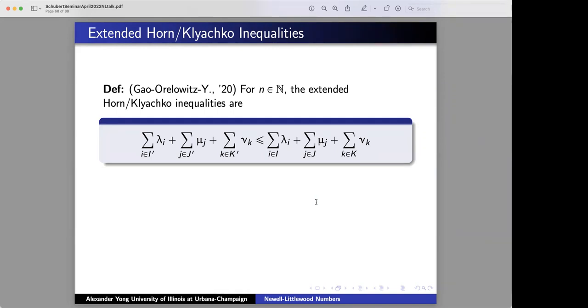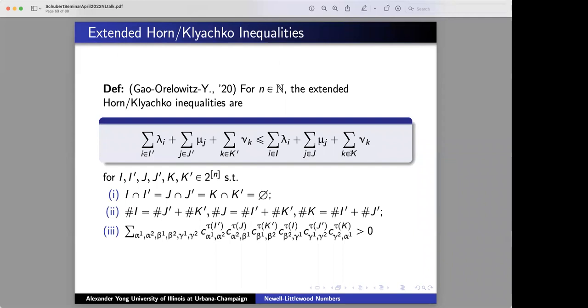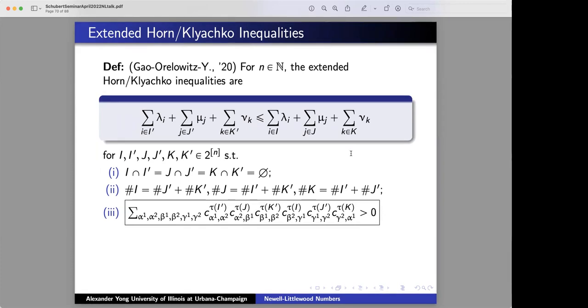And the general form of inequalities has some similar flavor. Instead of, well, one less than equal to two, you have three less than three, and you're summing over subsets of the eigenvalues, but with a whole bunch of crazy conditions on them. And it's the third condition here that I want to emphasize. It looks awful because you're summing over sums of products of six LR coefficients.